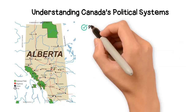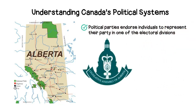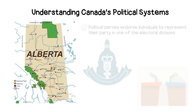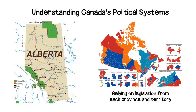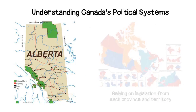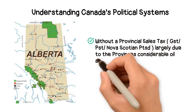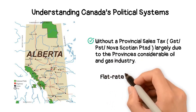In provincial elections, political parties endorse individuals who represent their party in one of the electoral divisions and compete for the job of Member of Legislative Assembly, or MLA. During the election, the parties discuss their ideas and platform. Local government is highly varied across Canada, differing by province and relying on legislation from each province and territory for specific powers and areas of responsibility. Alberta is the only province without a provincial sales tax, largely due to the province's considerable oil and gas industry. Unlike other provinces, which use a progressive income tax regime, Alberta uses a flat rate income tax of 10%.